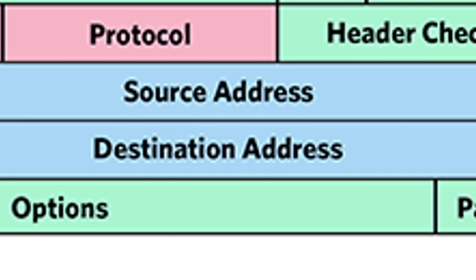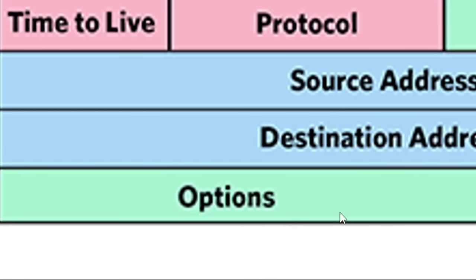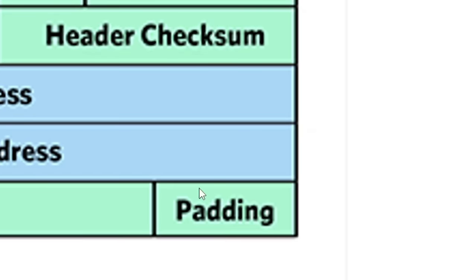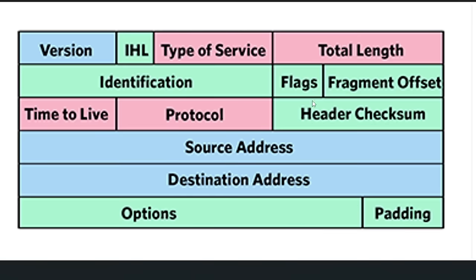In rows 4 and 5, Source and Destination are super important because they show where the packet is coming from and where it's headed. Finally, in row 6, Options is a flexible and optional part of the header, while Padding fills in any extra space. Understanding these details helps in figuring out how data travels across the internet and can even give clues about the systems sending and receiving the data.